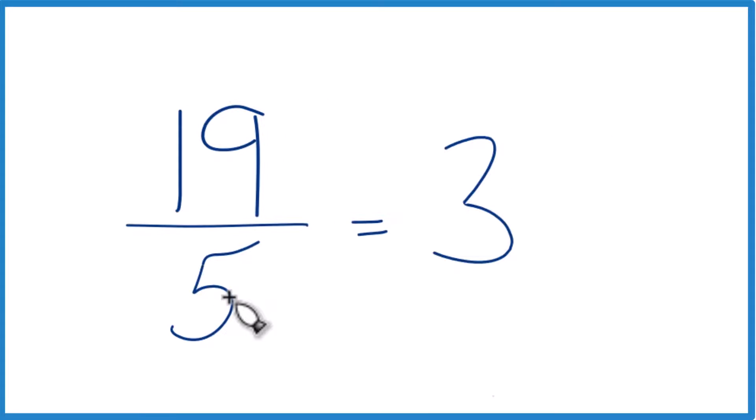3 times 5, that's 15, with a remainder of 4. 19 minus 15, that's 4. So the 4, that remainder, that becomes our numerator.